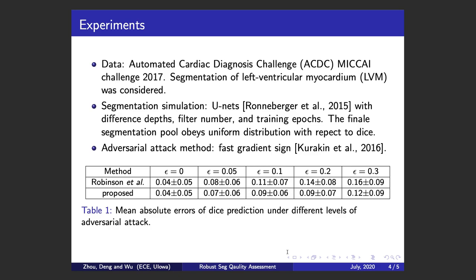Our metric for prediction quality is the mean absolute error of the dice prediction. We use epsilon to indicate attack intensity, where a larger epsilon means a stronger attack. As shown in the table, when there is no attack (epsilon equal to zero), our method performs comparably to the current state-of-the-art. But as attack intensity increases, our method proves more robust than the current method.